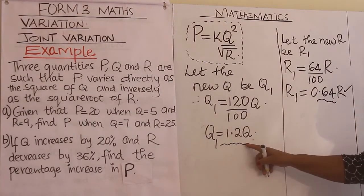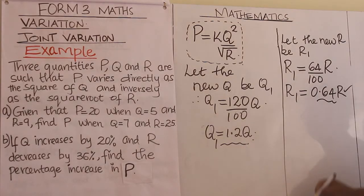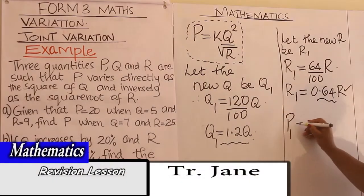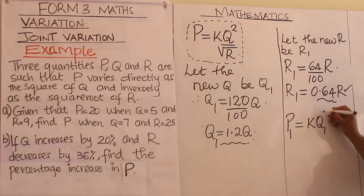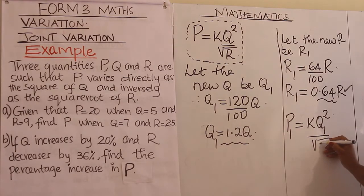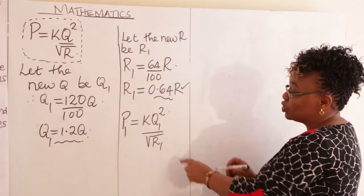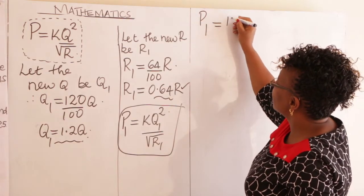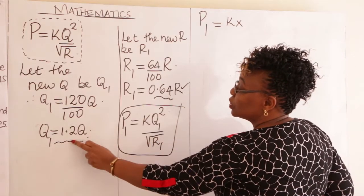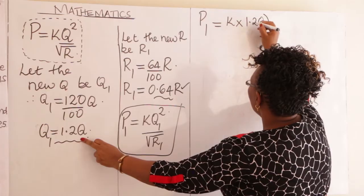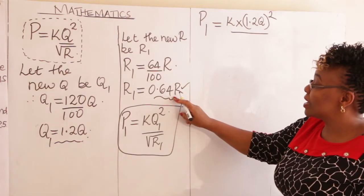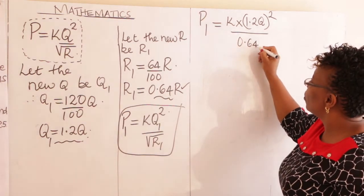After getting these two, the new P equals K times the new Q squared over the square root of the new R. Substitute: new P = K × (1.2Q)² divided by square root of 0.64R. Since 1.2 squared = 1.44, this becomes 1.44 × KQ² divided by square root of 0.64R.